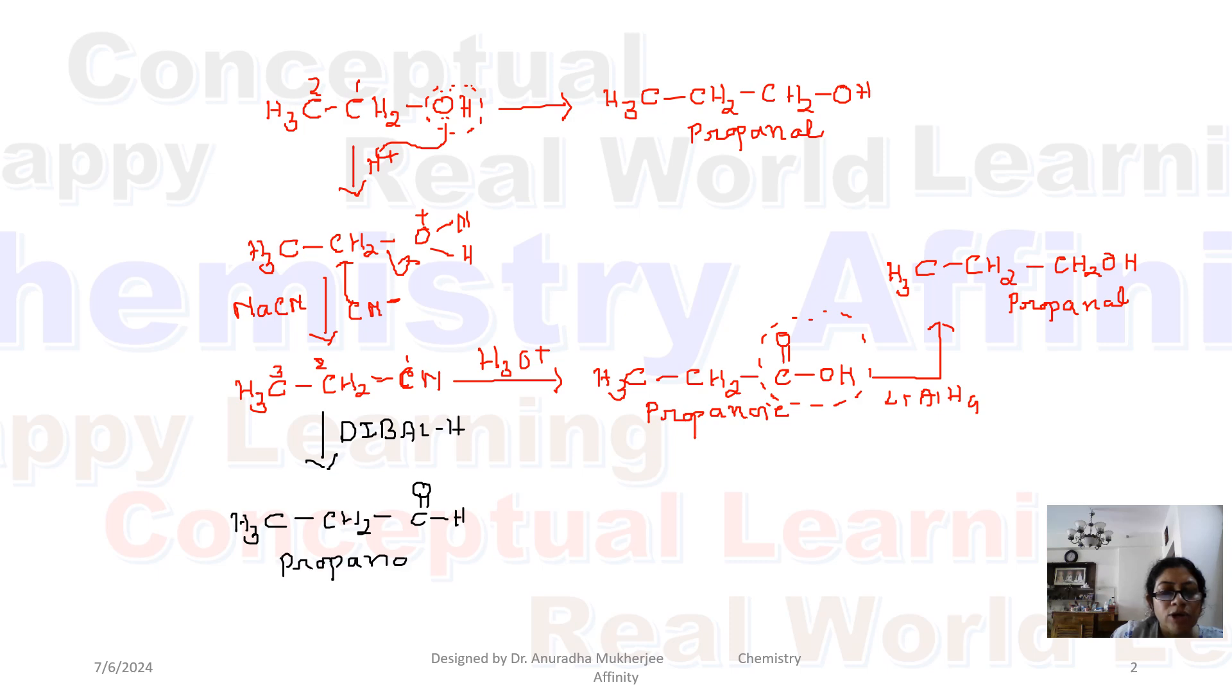Now when we treat propanal with any kind of reducing agent, we can use sodium borohydride also. The aldehyde group converts to primary alcohol. So we are getting n-propanol.